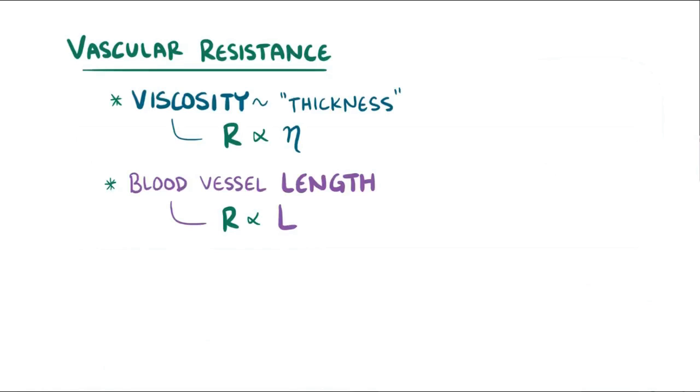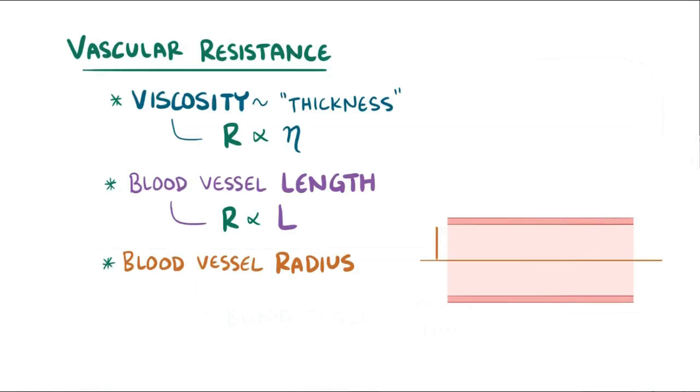A third factor that affects resistance is blood vessel radius, which in this case is inversely proportional to the resistance, to the fourth power. This means that as a vessel's radius goes down, its resistance really goes up. Unlike viscosity and length, the radius can change from minute to minute, especially the radius of arterioles, which can vasoconstrict,